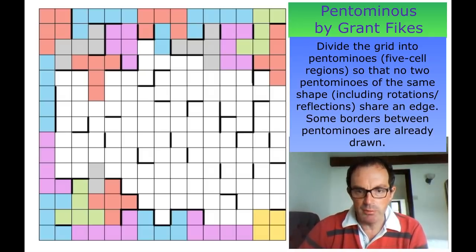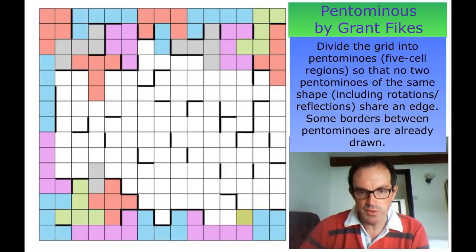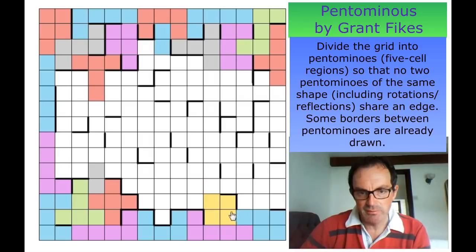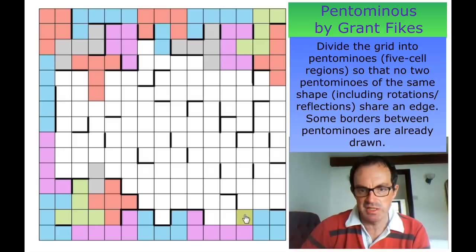We don't quite know at this point whether the P pentomino is taking this square or that square. But if it takes this square, what happens to this region? It has to be a P pentomino by exactly the same logic — and regardless of which P pentomino orientation it is, it's connected to the first P pentomino.